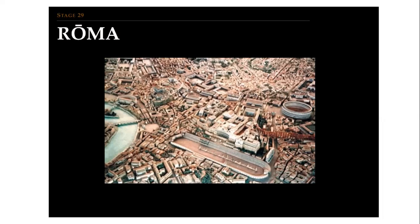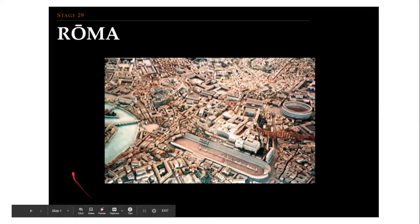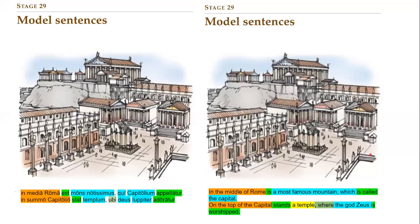You can jump around. I'm just going to be going through the translation and answering some grammar questions for you. So, model sentences: 'In medio monte notissimus qui Capitolium appellatur. In summo Capitolio stat templum, ubi deus Iuppiter adoratur.' The grammar of stage 29 is about passive verbs, and we're going to be seeing a lot of them here.